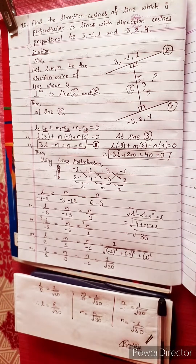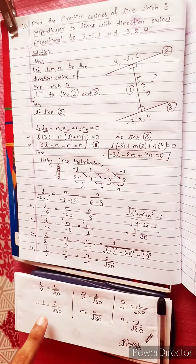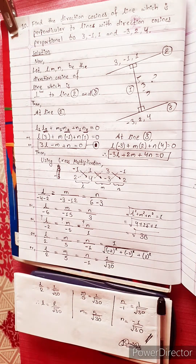Therefore, the direction cosines of the required line are 2 over root 30, 5 over root 30, and minus 1 over root 30.